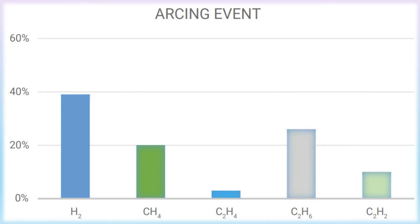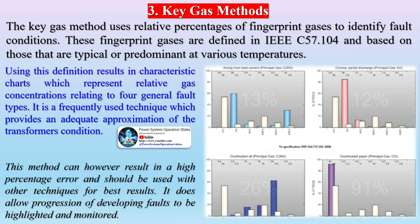Rogers' ratio was developed from Halsted's thermal equilibrium and Dorn-Einberg ratios together with information gained from failed units. It was refined to three ratios which, when compared, can be used to diagnose six possible faults. Rogers' ratio method has the advantage that it is quantitative and is independent of oil volume, and can therefore be used as a diagnostic tool on any oil-filled transformer.